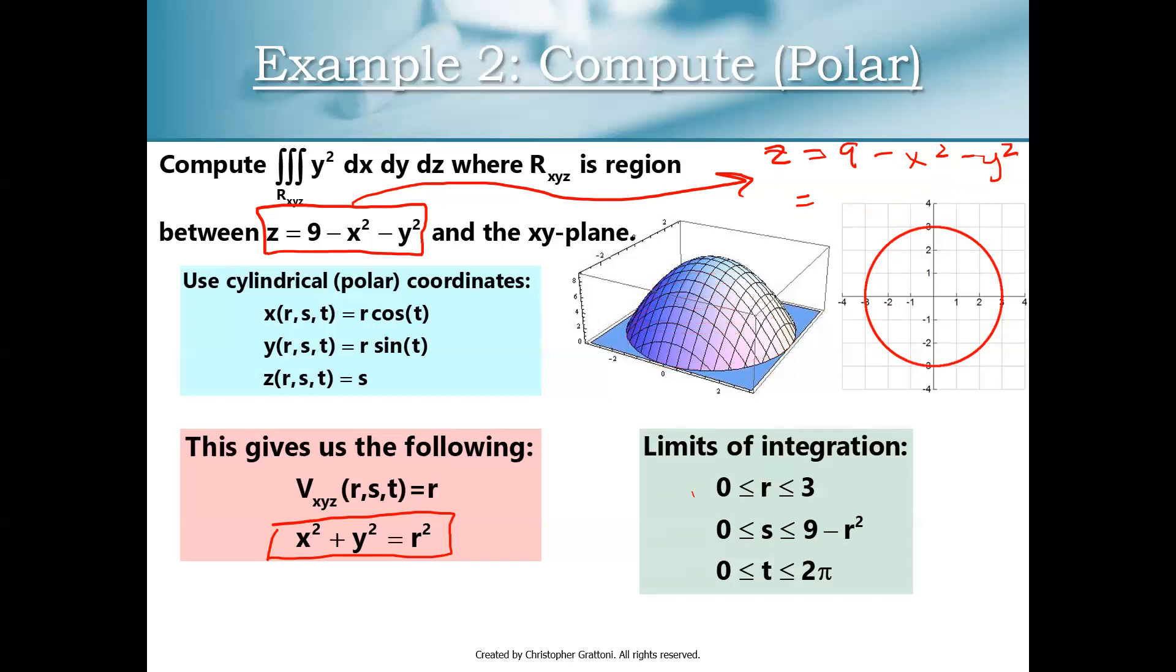So those will be our limits of integration when we want to actually compute our triple integral. So you can see it animated here. Here's s bottom equals 0, s top is equal to 9 minus r squared. We see that the largest radius that we get is that bottom cross section that has a maximum radius of 3, and then we have every radius in between for all of our cross sections. So from 0 to 3. And then you can see that we have a full rotation around that circle. So t max is 2 pi. So t ranges from 0 to 2 pi.